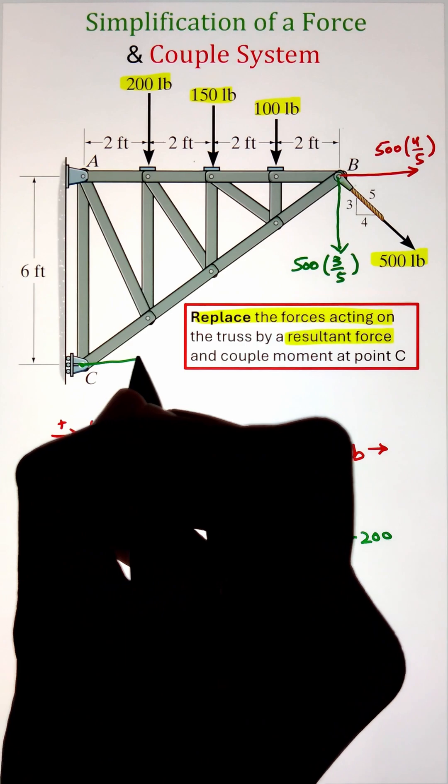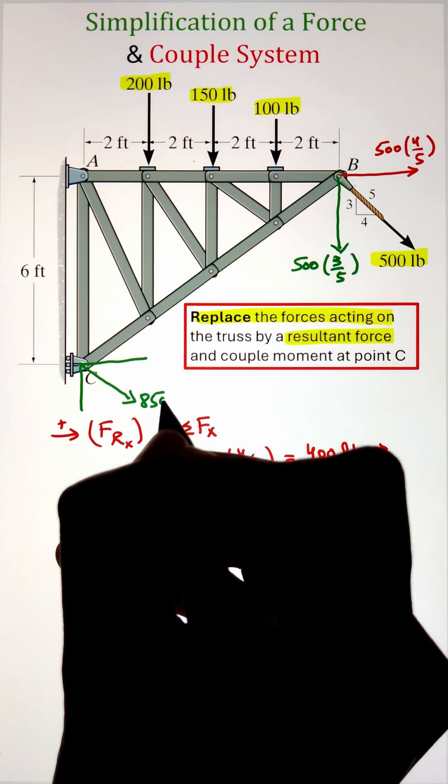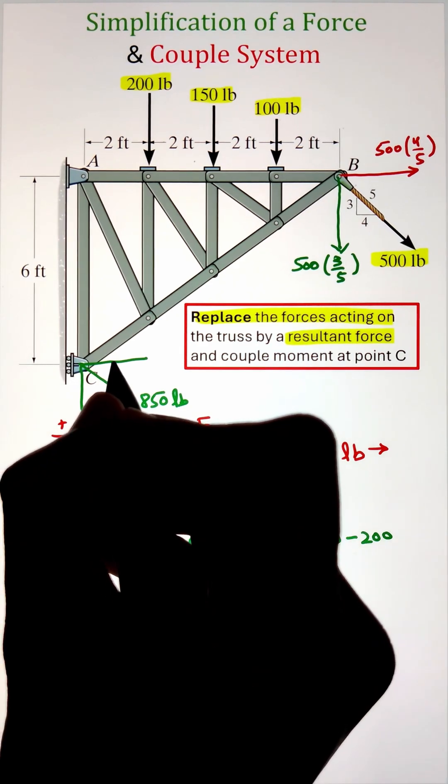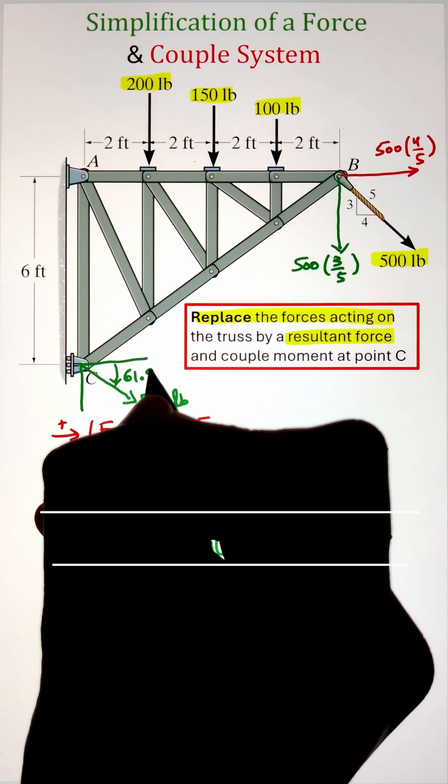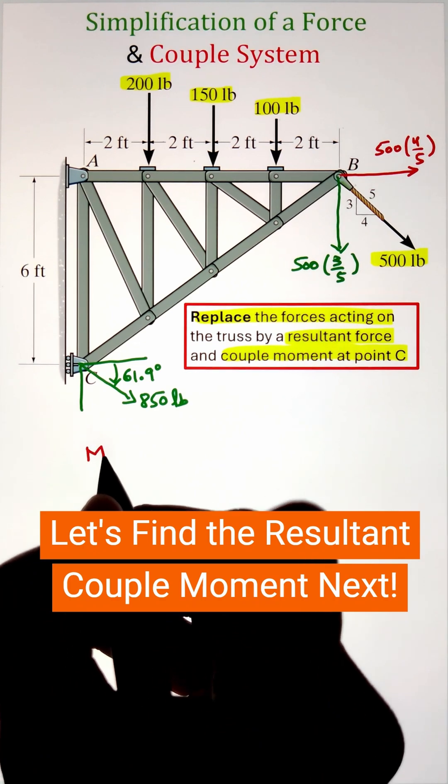To represent it at point C, since our x component is going towards the right and y component is going downward, it makes our force in the fourth quadrant and the angle is measured in the clockwise direction from the positive x axis.